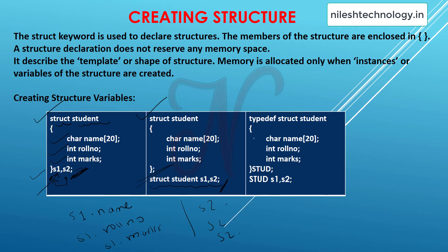You can also use typedef. Typedef is the user-defined data type which copies the property of a data type into a variable or identifier. So here, typedef can copy all the properties of struct student into a variable — let's call it stud. Instead of using the two words struct student, you can use just one word stud. Stud means struct student because the struct student properties are copied into the stud identifier. By using stud you can declare variables like stud s1, s2.